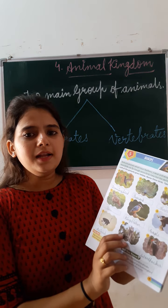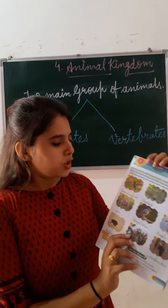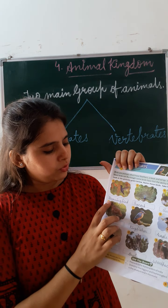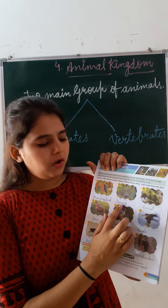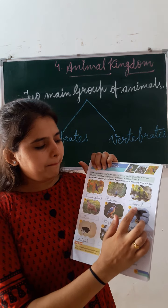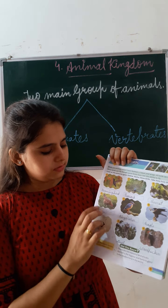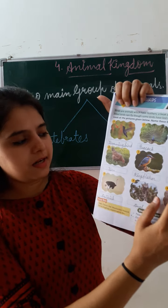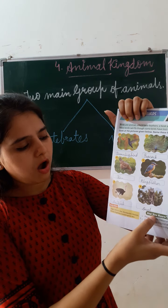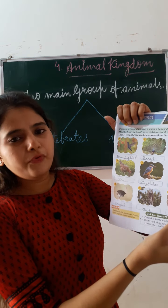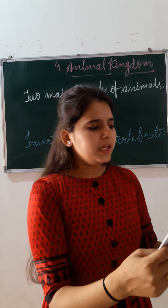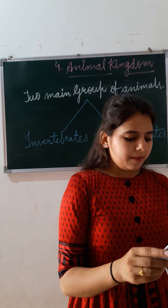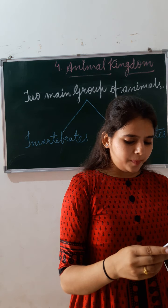Yeh kaun sa bird aayega — pictures dekhne hain aapko. First one: hummingbird. Second one: peacock. Parrot, hen, pink flamingo, eagle, ostrich, owl, woodpecker. Yeh jo aapko maine bata diya abhi — aap bhi dekho niche jo page number 9 mein diya hai.